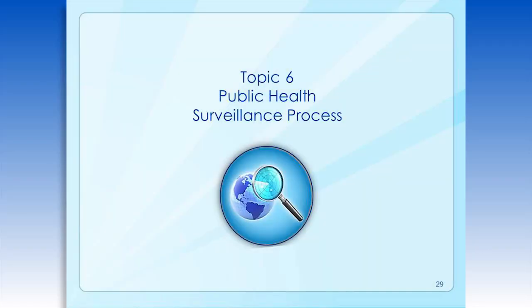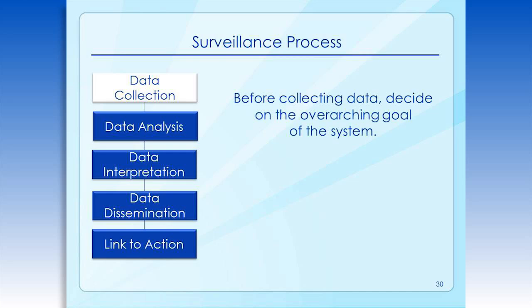A lot of decisions have to be made when you decide to place an illness or injury under public health surveillance, and many of these deal with the process itself. We'll discuss each one of the steps in the process. At least five steps in the surveillance process need to be considered when setting up a surveillance system. These include data collection, analysis, interpretation, dissemination, and follow-up action. Let's start by looking at data collection.